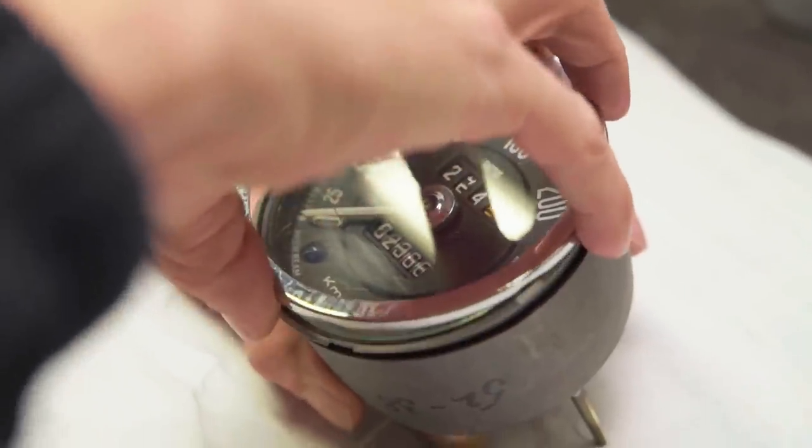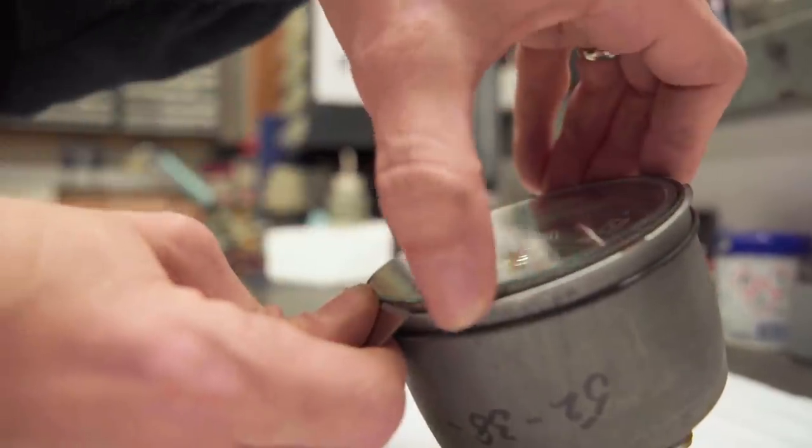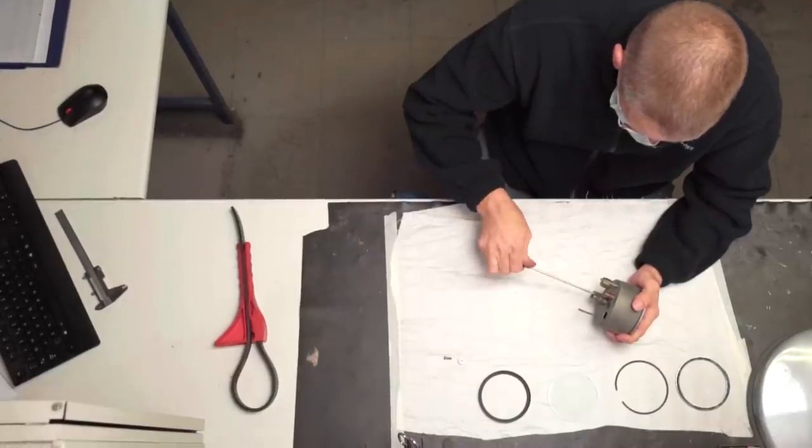Now I'm going to remove the bezel, the glass, the slip ring and any rubber seals that are in the front of the instrument.